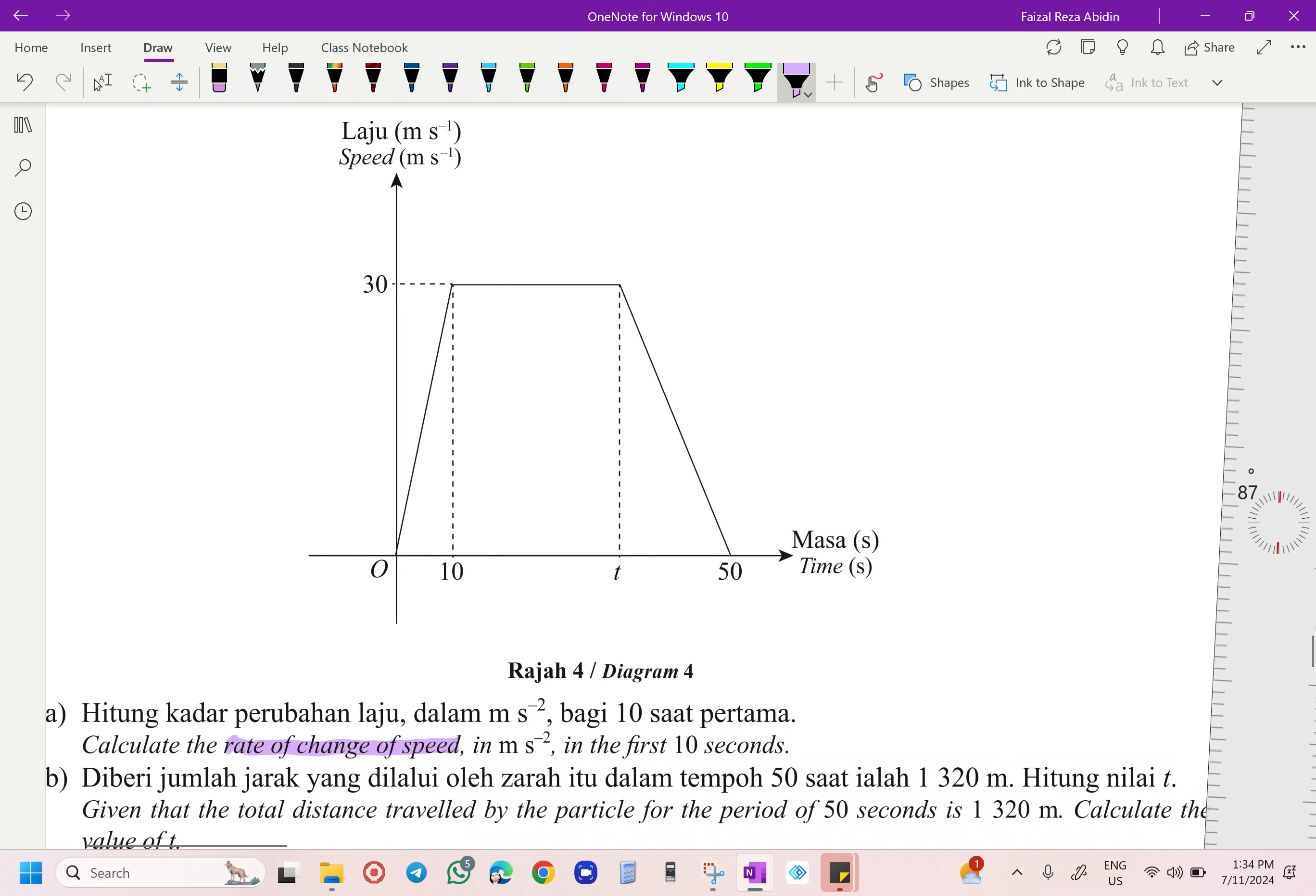That's going to be acceleration. Your gradient here. So we know that. How are we going to get our acceleration? So if you look over here, we are going to get 30 minus 0. Your acceleration here, 30 minus 0, and then 10 minus 0 there. Okay, so you are going to get 3 meters per second.